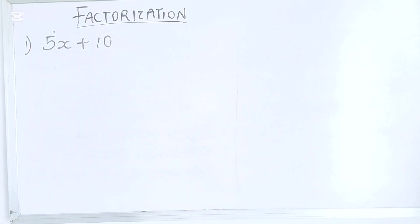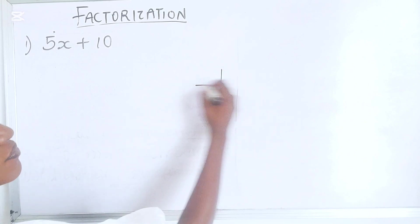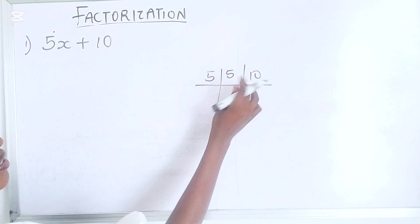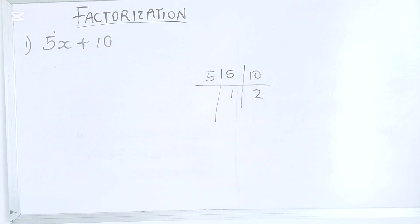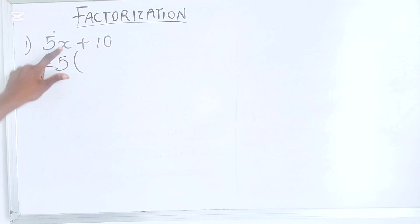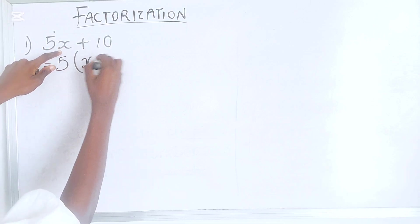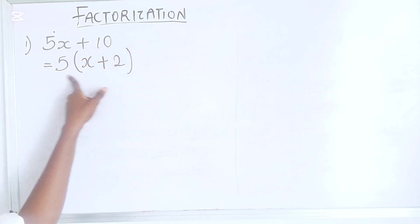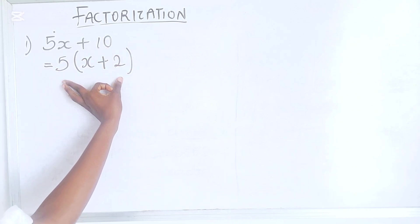You can do the usual 5, 10. 5 can go here in both of them. You know that 5 can go in 5 and 5 can also go in 10 without any remainder. And that's the highest common factor, right? So 5 is common. What are we left with? We're left with X and we're left with 2.